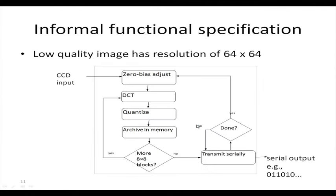We saw some informal way of functional specification where we mentioned these steps: zero bias adjustment, then discrete cosine transform, then quantization, then archival in memory. We take the 64 by 64 image into 8 by 8 blocks and repeat this 64 times. That was the informal specification.